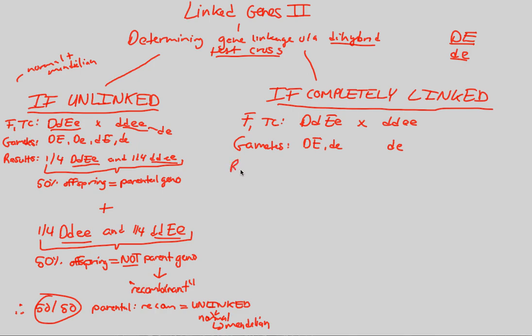Our results are going to be different because the gametes that are being input into this offspring are different than the gametes being input in the unlinked situation. We get a 50-50 ratio there, 50% offspring, 50% offspring. You know what we're going to get on this side?